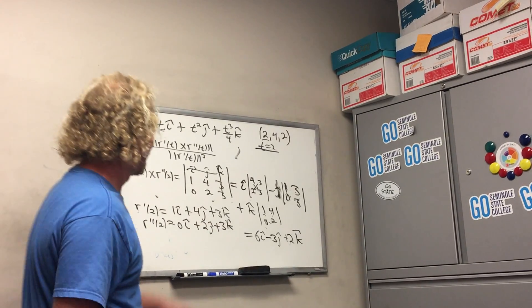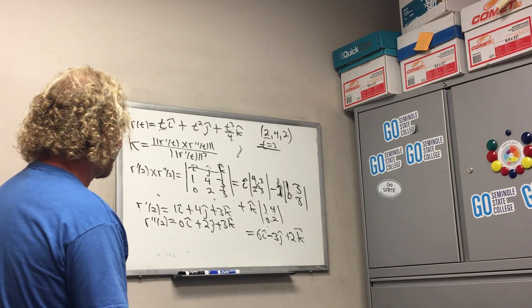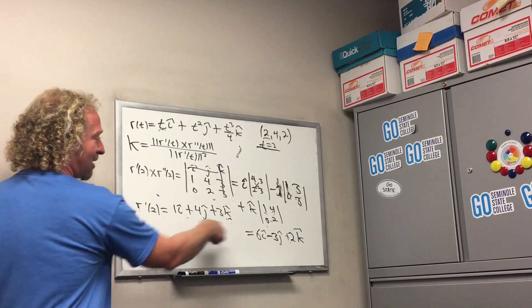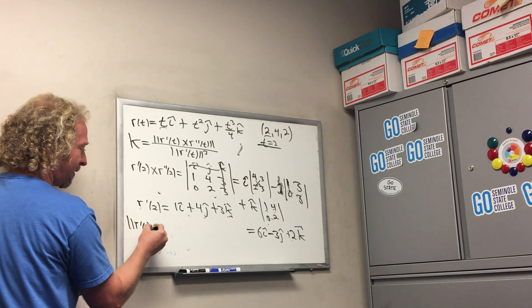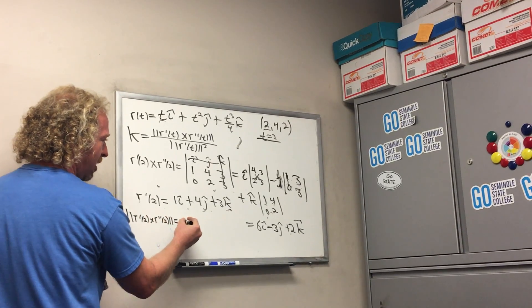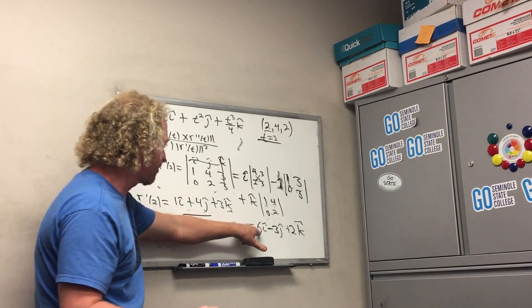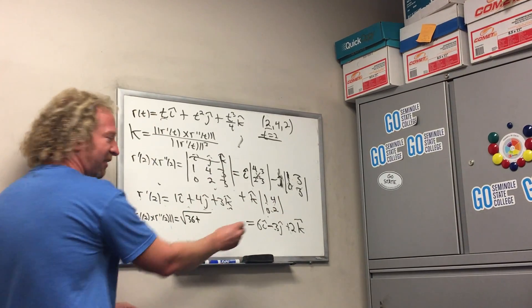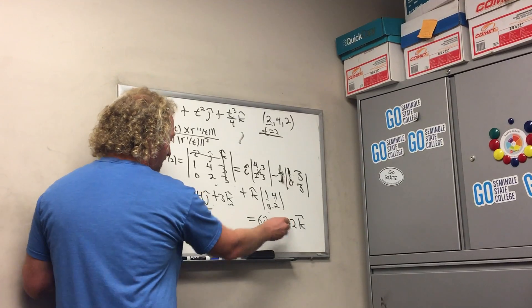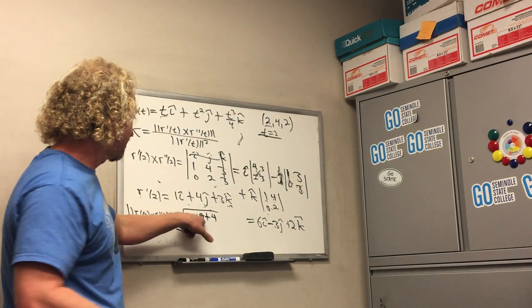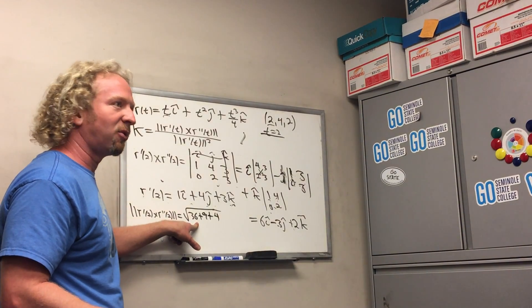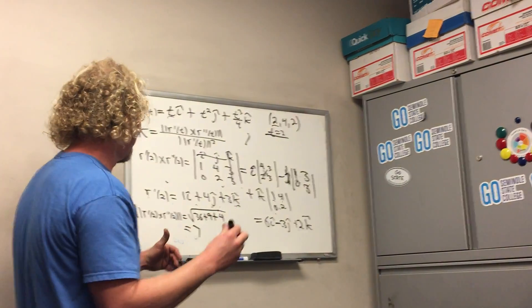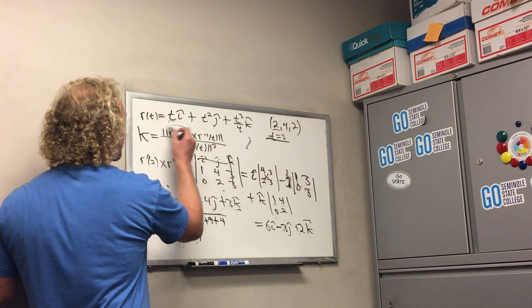We're going to take the magnitude of that. So the magnitude of this is going to be the square root, and then you square these guys. So it would be 36 plus, and then that's going to be 9, negative 3 squared is 9, plus, and that would be 4. So it's 13 plus 36 is 49. What's the square root of 49? 7. I don't want to mess up again. The problem is too long. That's going to be the 7 up here.